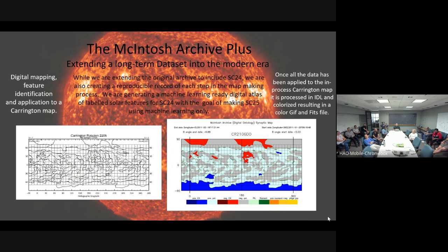The digital mapping process is applied to the complete black-and-white map; once all data has been applied it's processed in IDL and colorized, resulting in a colored GIF and searchable FITS file using the identical programs created by Sarah Gibson. It's a little like paint by numbers for big kids. You can search for all sunspots, positions of all filaments, how the polarity inversion line moves, and how the polar crown filament evolves across solar cycles. We are also creating a reproducible record of each step in the map-making process and generating a machine-learning-ready digital atlas of labeled solar features for solar cycle 24, with the goal of making solar cycle 25 using machine learning only.